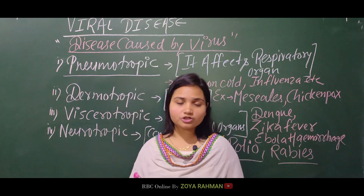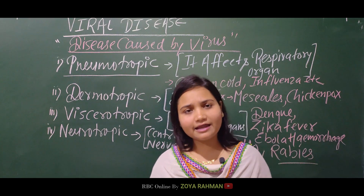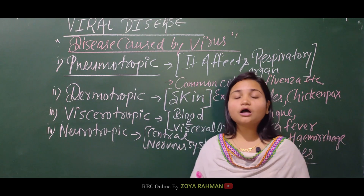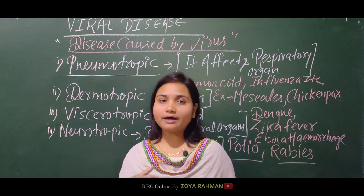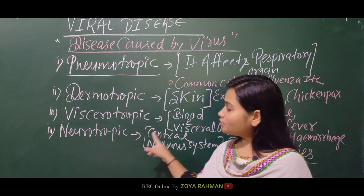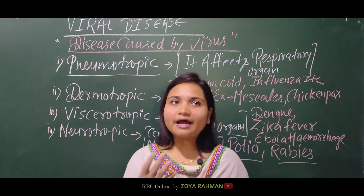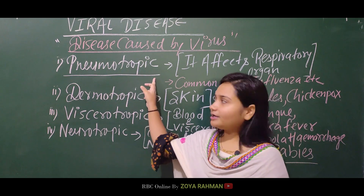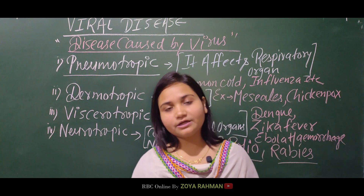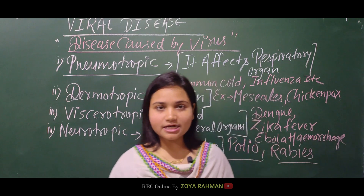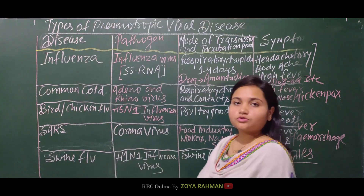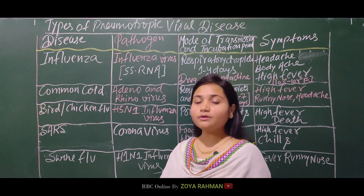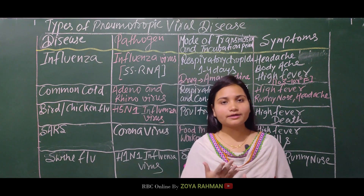Neurotropic disease affects the central nervous system and can paralyze the mind. There are many symptoms we will see in detail. Now let's start with the first category. On the board you can see all the viral diseases written. Pneumotropic means the lungs are the main problem, causing respiratory issues.